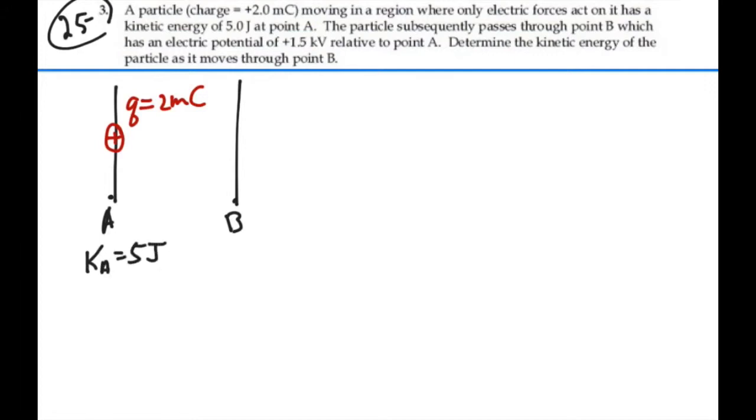We also know that the potential at B is 1.5 kilovolts higher than it is at A. So in other words, our change in potential, which is our potential at B minus our potential at A, is equal to 1,500 volts. That's a given. So we're interested in finding what is our kinetic energy at B.